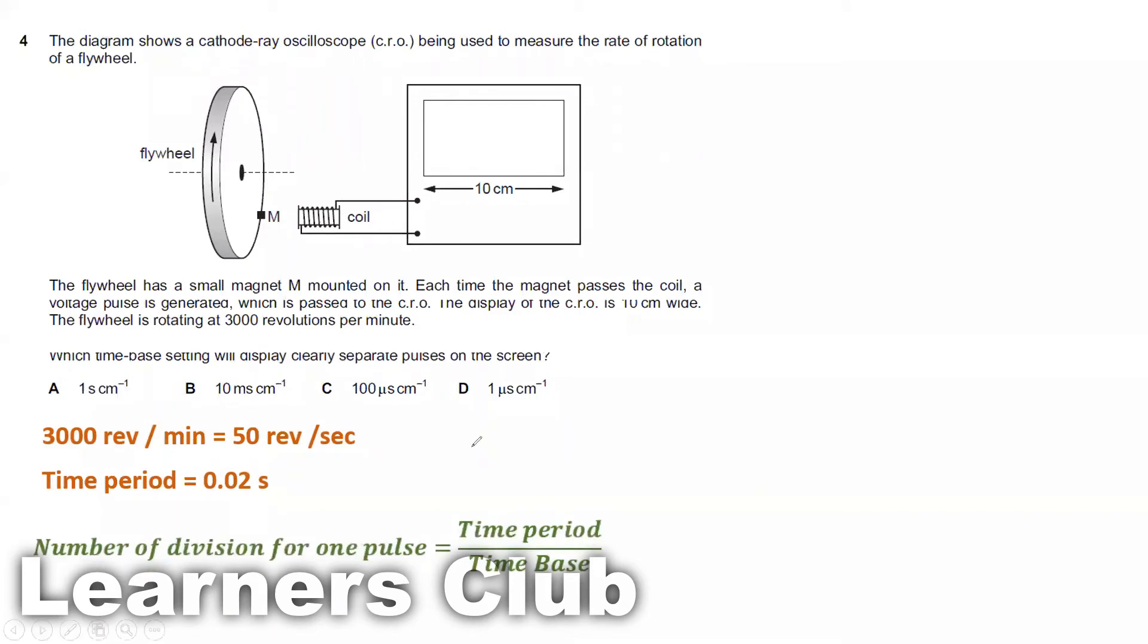In a CRO, to find the value of time period, we take the number of divisions into the time base. If you multiply the division into time base, it will give you the time period. Now we need to know the number of divisions in which one pulse can be clearly visible. So divide time period by the time base. To find the answer, we'll check every option and see which one will give a proper, reliable, acceptable number of divisions for one pulse.